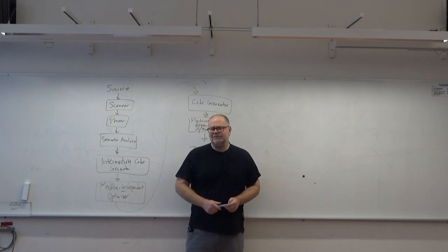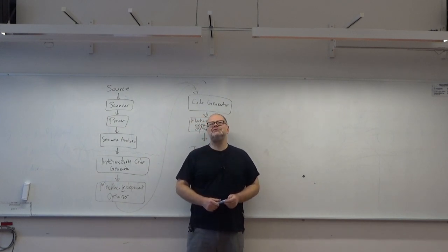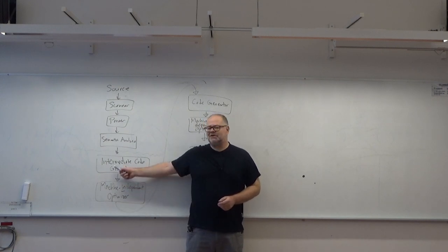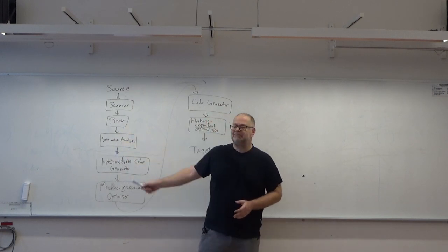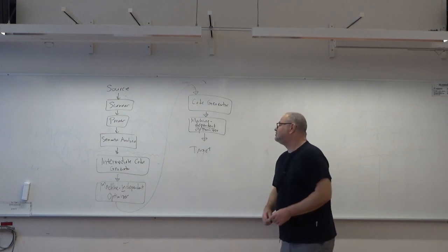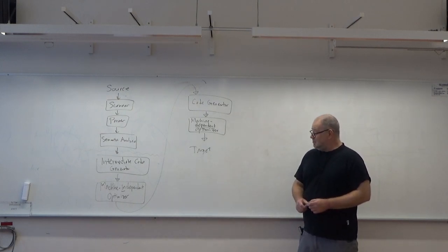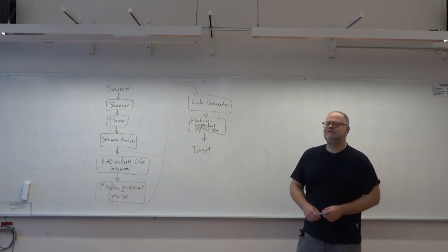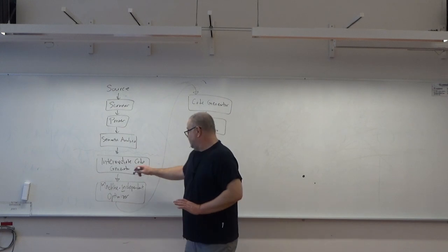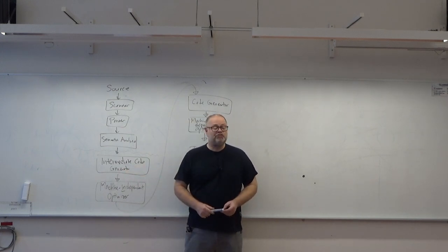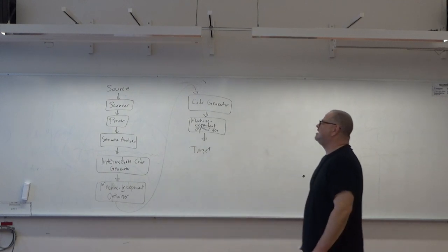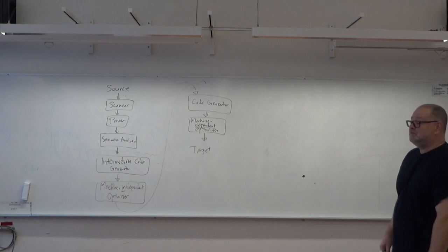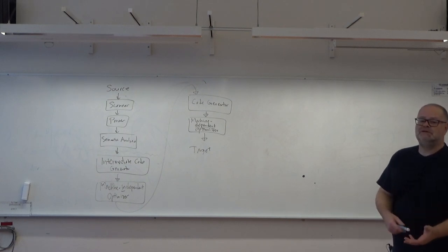Why do we have an intermediate code generator? Why not optimize directly from the trees from the parser, or the decorated parse trees from the semantic analysis? The reason is that this intermediate code is mostly designed to be possible to optimize. And I've said before that 'optimize' doesn't necessarily mean making it optimal — it just means improving it, making it smaller and faster.